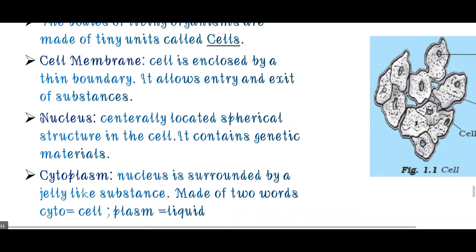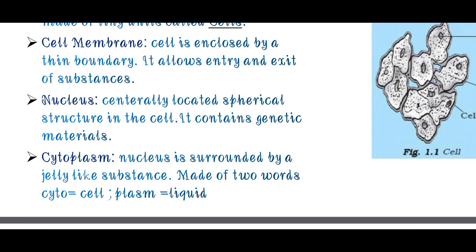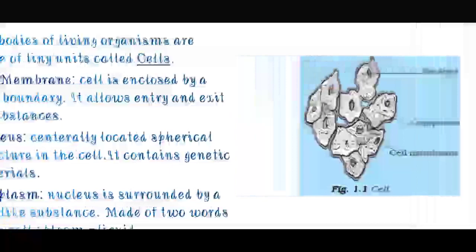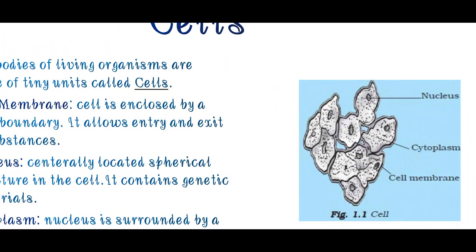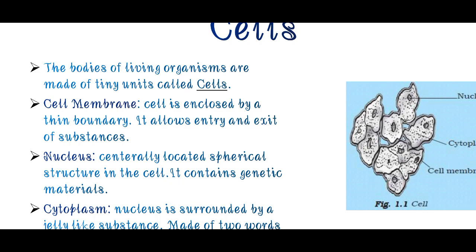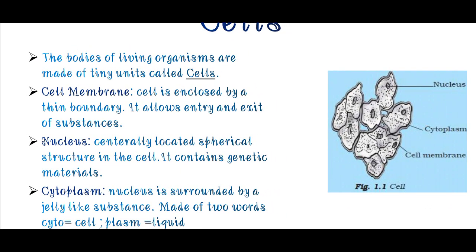Nucleus is present in every cell. Next is cytoplasm. The nucleus is surrounded by a jelly-like substance. Cytoplasm is made of two words: 'cyto' means cell and 'plasm' means liquid. So cytoplasm is a jelly-like substance filled throughout the cell. You can see the dot-dot structures in each and every cell - that dot-dot structure is cytoplasm.